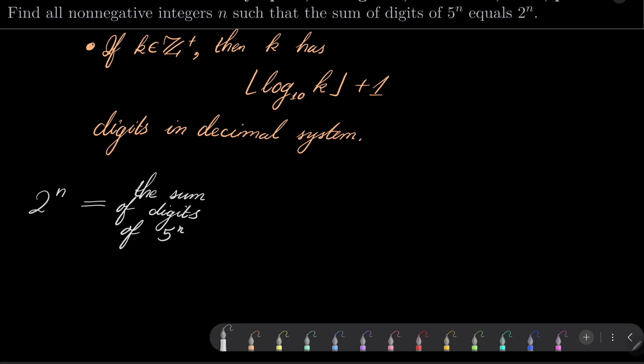But 5 to the power of n has decimal logarithm of 5 to the power of n floor plus 1 digits. And notice that every digit is from 0 to 9, so the most which we can get is 9 times the number of digits.